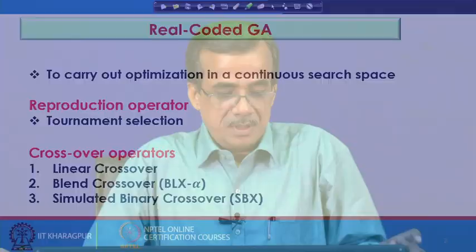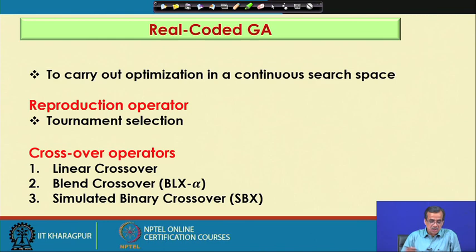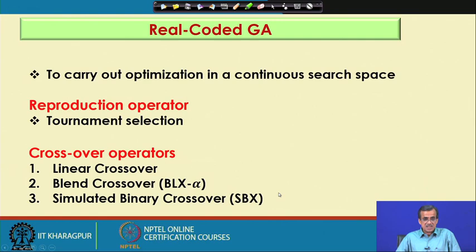The reproduction operator, which we generally use in genetic algorithm to select the mating pool, is tournament selection — the principle of which I have already discussed. We will now concentrate on the crossover operators. In Real Coded GA, we use different types of crossover operators like linear crossover, blend crossover, BLX alpha, simulated binary crossover SBX, and so on. I am going to discuss the principle of these crossover operators one after another.